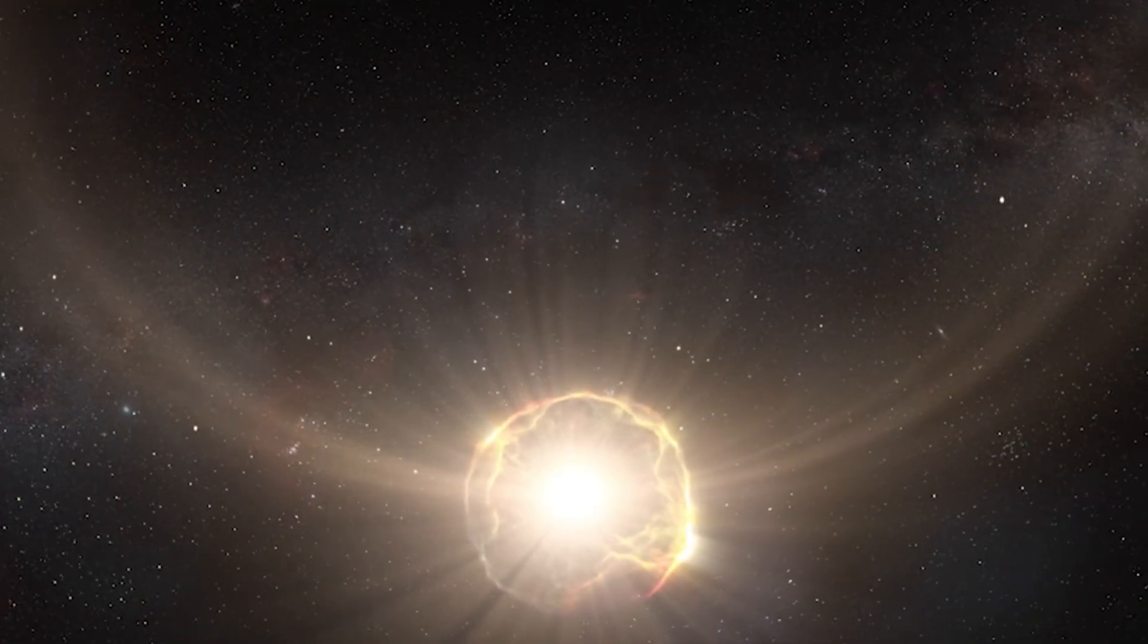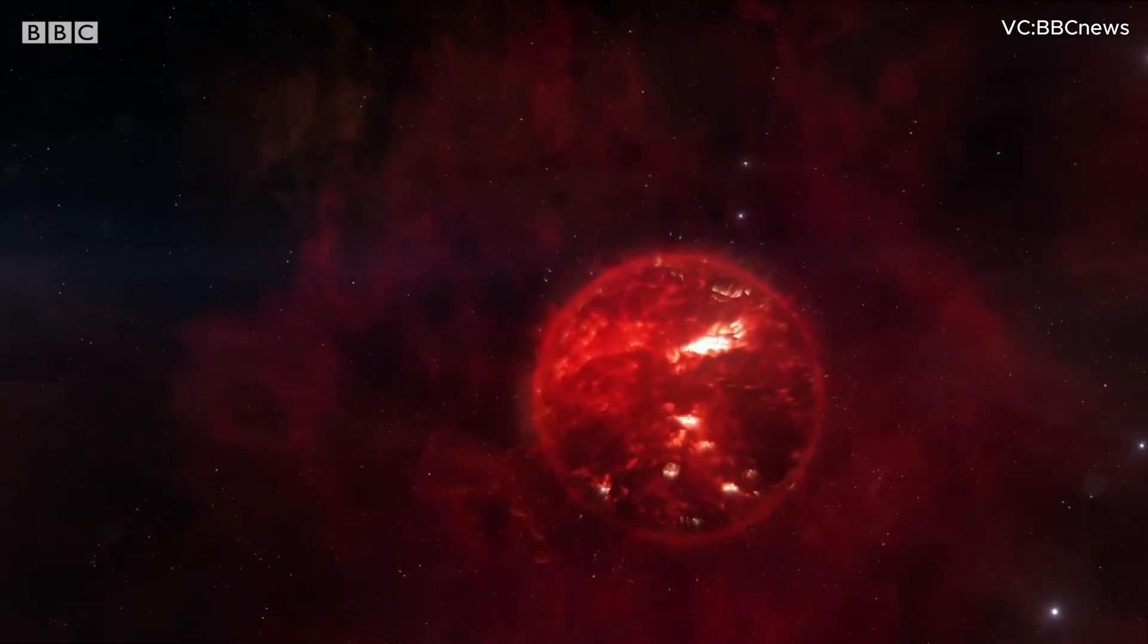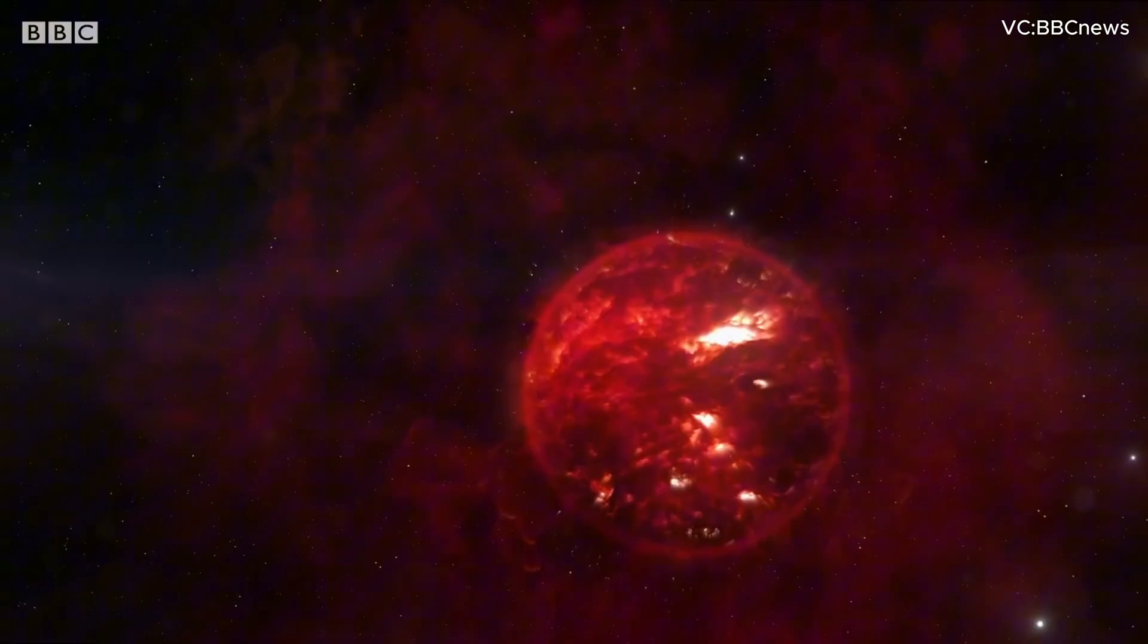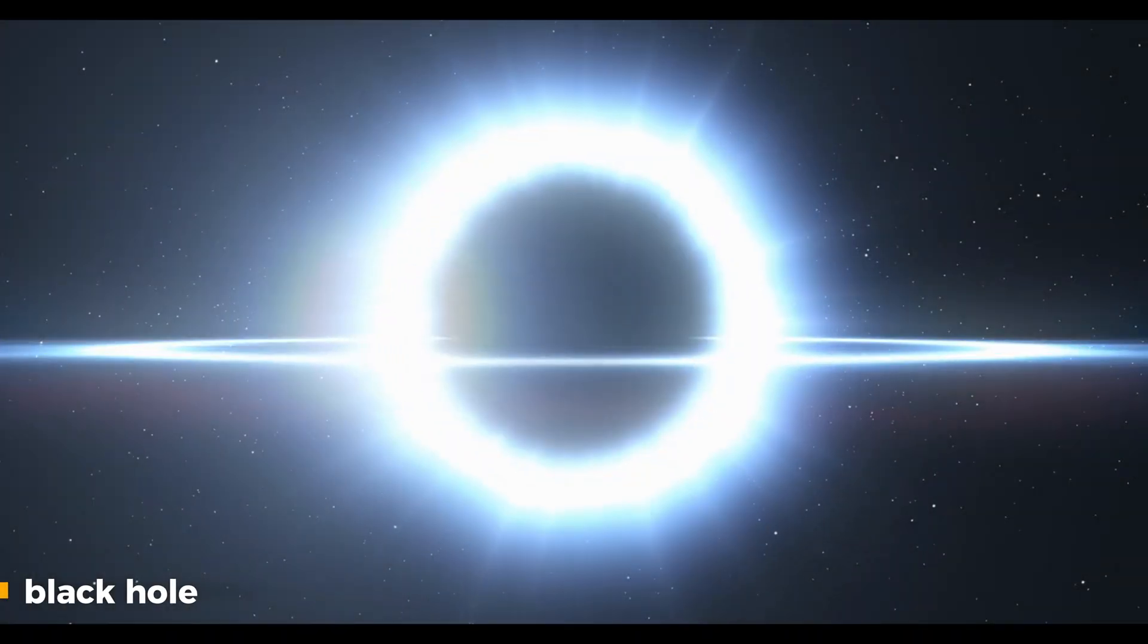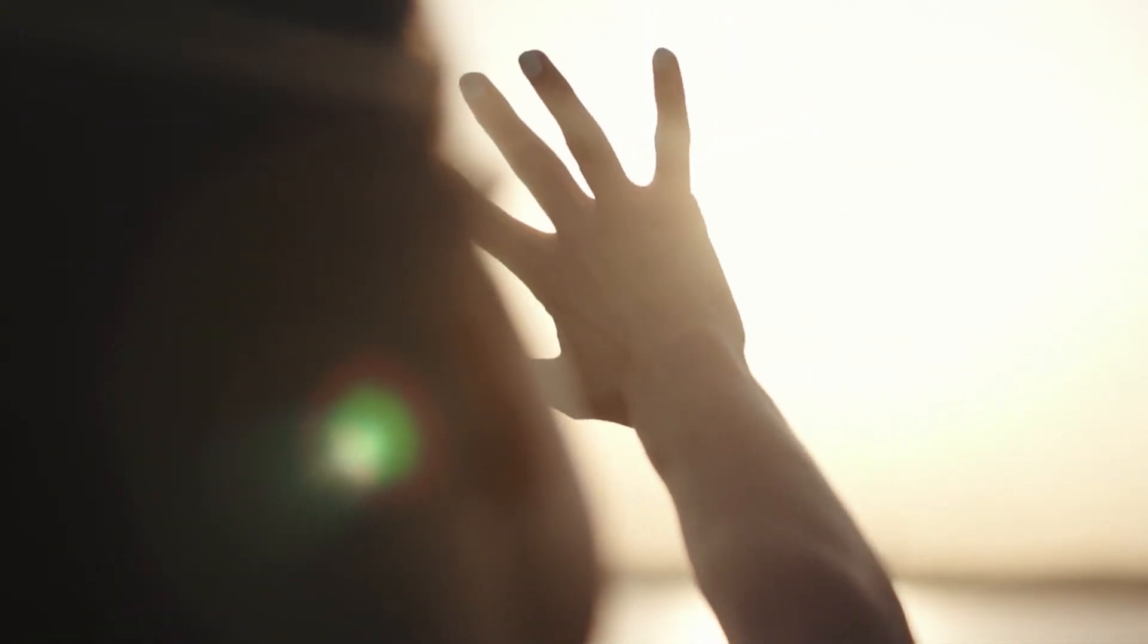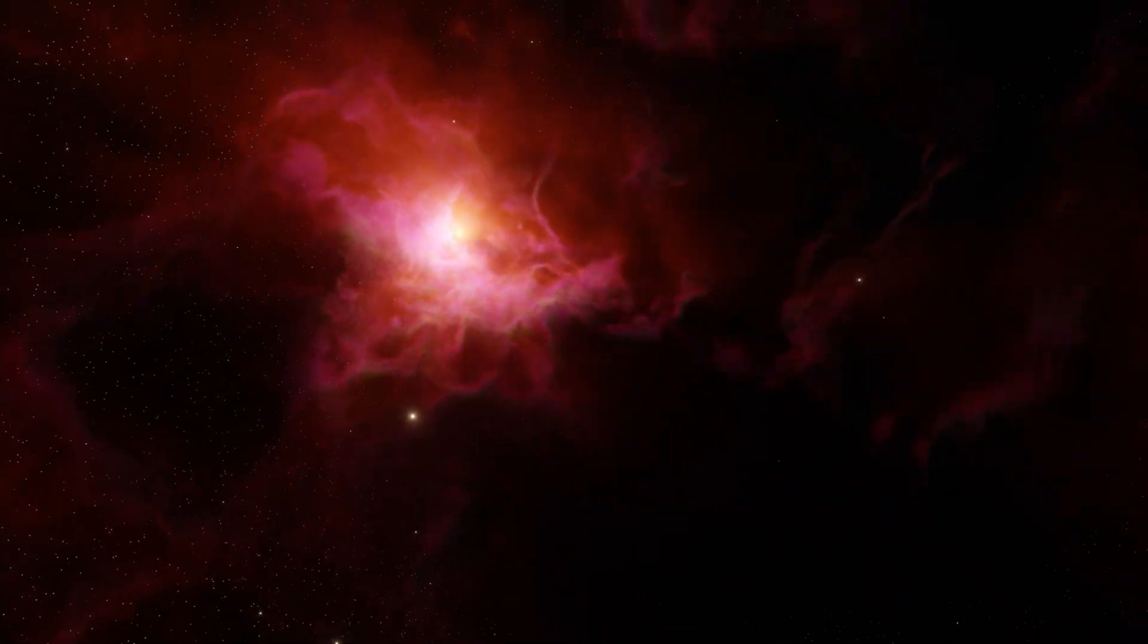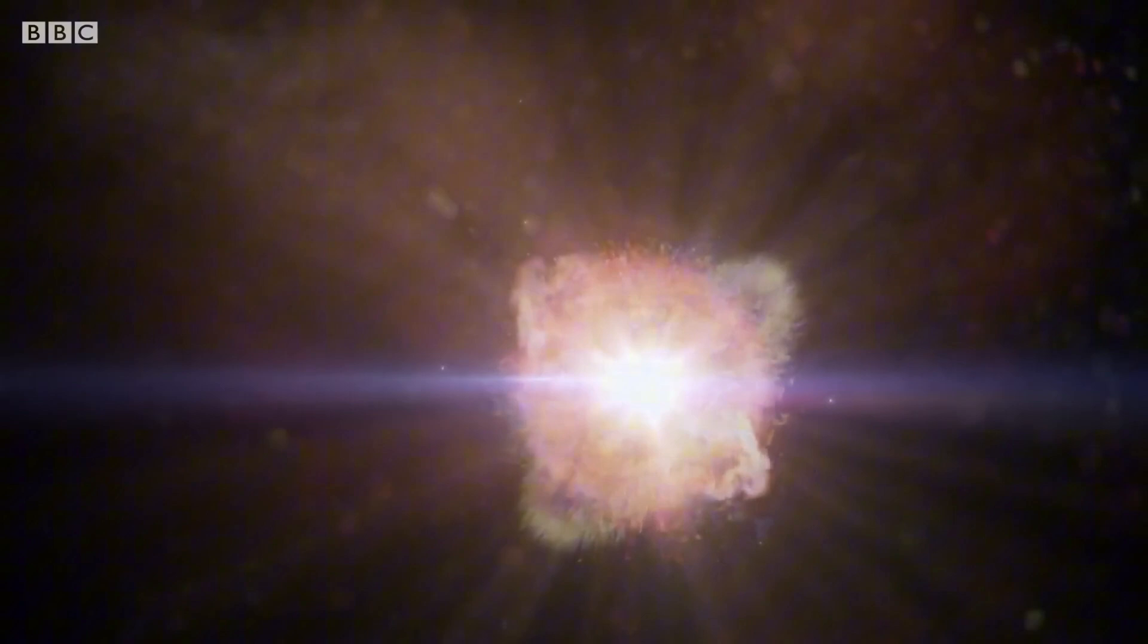A supernova is an extremely powerful, super bright explosion of a star. It is the biggest explosion humans can ever see. The end result of a supernova explosion can either be a neutron star or a black hole, two of the most exotic objects in the universe. At its peak, a supernova can be as bright as an entire galaxy and can even be visible during the day. It can take months for the brightness to dim. Material several times the mass of the sun is expelled at speeds several percent of the speed of light in a supernova explosion.